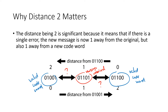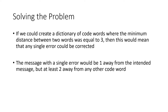The solution is to create a dictionary of code words where the minimum distance between any two code words is three. That means any single error would be correctable: if you change one digit of a valid code word, you are one step away from that word but still at least two away from anything else. So you would never get a tie of one, which allows us to actually correct our messages.